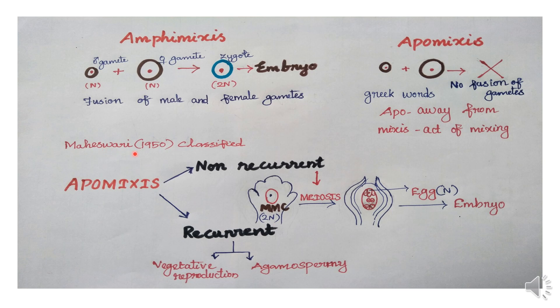Mageshwari was an eminent botanist in the embryology and anatomy field. Apomixis is of two types: non-recurrent and recurrent. Non-recurrent is not occurring often — it is a type of apomixis.